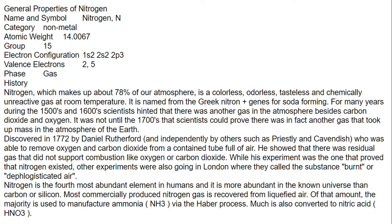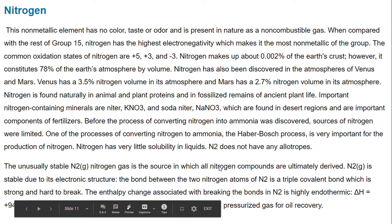In 1772, Daniel Rutherford discovered nitrogen, and it was independently discovered by Priestley and Cavendish. By removing oxygen and carbon dioxide from a tube of air, he showed there was a residual gas that did not support combustion like oxygen or carbon dioxide. Others in London called the substance 'burnt' or 'dephlogisticated air.' Nitrogen is the fourth most abundant element in humans. Most commercially produced nitrogen gas is recovered from liquefied air, and the majority is used to manufacture ammonia by the Haber process; much is also converted to nitric acid.